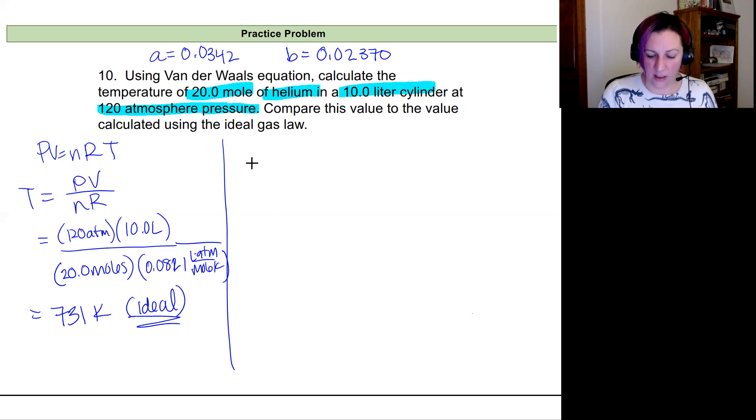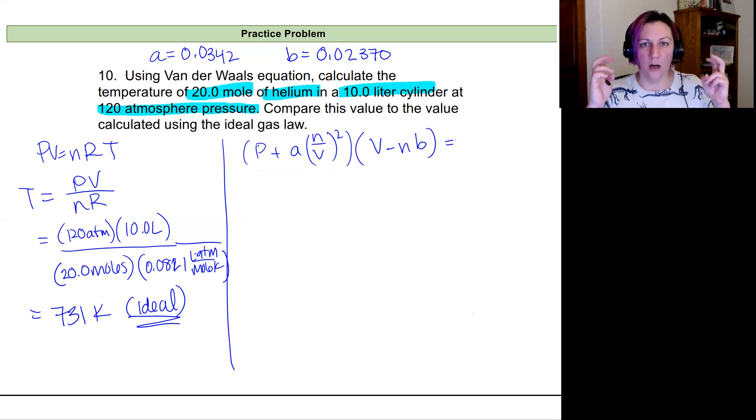So I'm going to write it back up here. So it's going to be our pressure plus its correction using A times our volume that's corrected for the particle size. And helium is pretty small. So I would expect that to have a small impact on this one, especially since we're at high pressures of only 120. And that'll be equal to the number of moles times R and T.